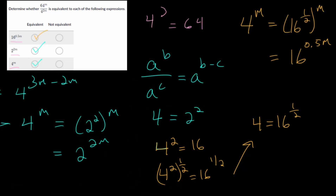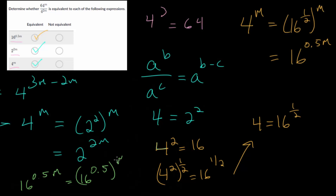There is a second approach: we can start with the answer and see if we can manipulate it to reach one of the expressions we found. Starting with 16 to the 0.5m — since we have a product in the exponent, that's really an exponent to an exponent — this is 16 to the 0.5, all raised to the m. And 16 to the 0.5, or 16 to the one-half, is the square root of 16, all raised to the m. The square root of 16 is 4, so this becomes 4 to the m, which we know is equivalent.